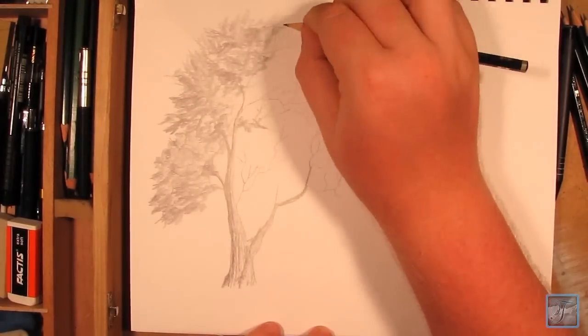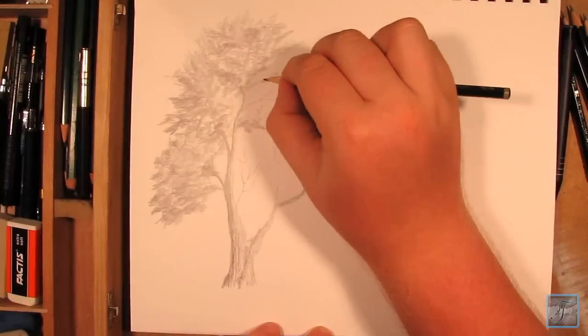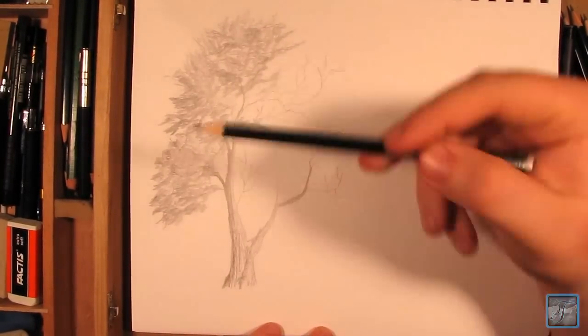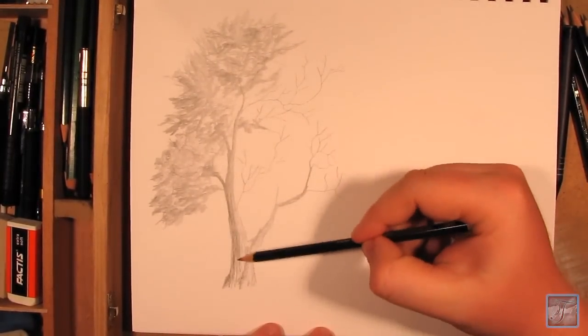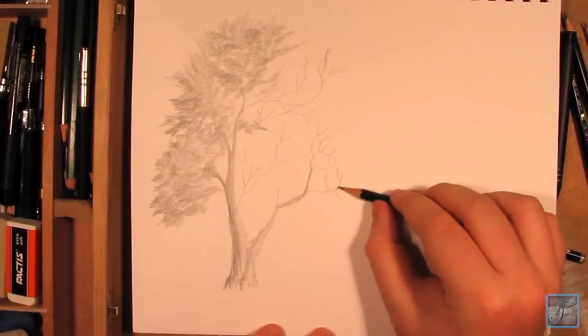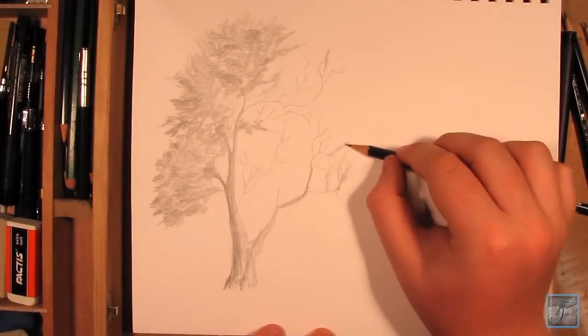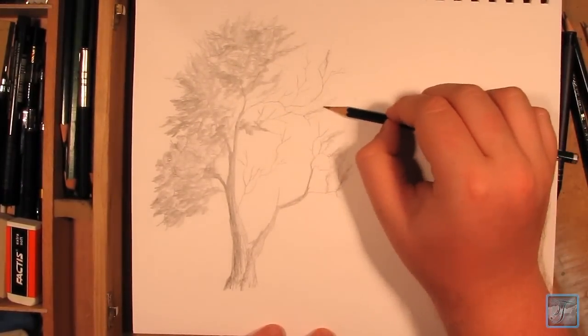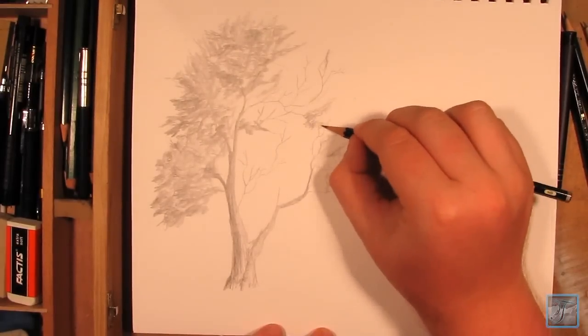I used that for most of the tree branches in general and the leaves. Then when I got over to the lighter side of the tree, I switched over to a 2H and HB pencil, kind of varying between the two, just seeing how they would kind of play out in the end.